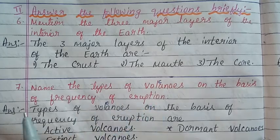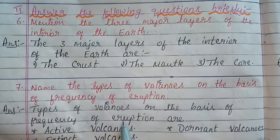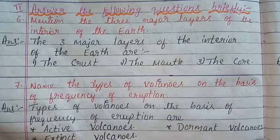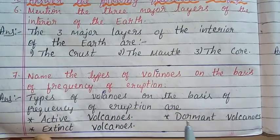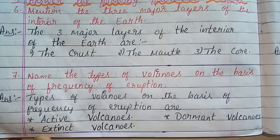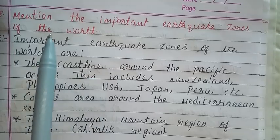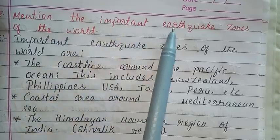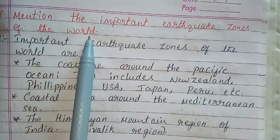Question 7: Name the types of volcanoes on the basis of frequency of eruption. Answer: Types of volcanoes on the basis of frequency of eruption are: Active volcanoes, Dormant volcanoes, and Extinct volcanoes.